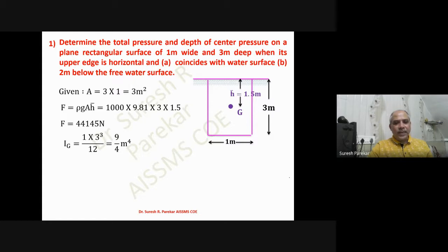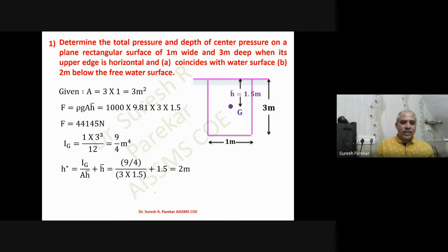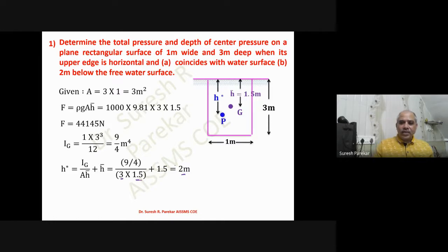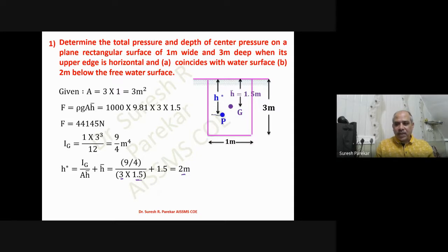Then I_G = b·d³/12, and that value is 9/4 meters to the power four. The center of pressure h* = I_G/(A·h̄) + h̄. Substituting: I_G = 9/4, A = 3, h̄ = 1.5, plus h̄ = 1.5. Calculating this, we get h* equal to 2 meters. So for the first case, h* = 2 meters and the pressure force = 44.145 kilo Newtons.